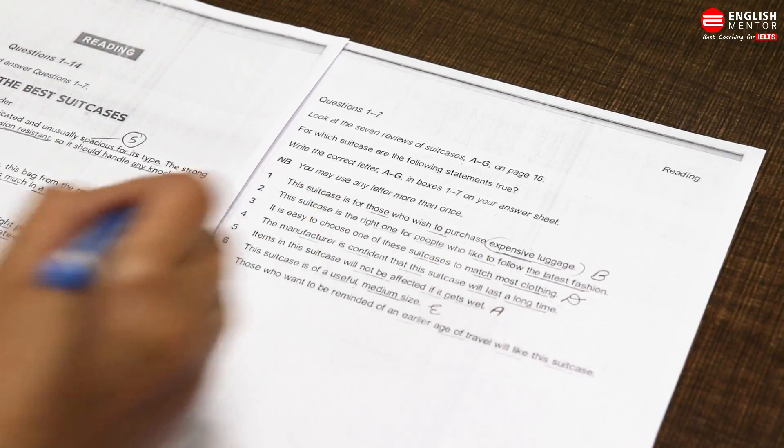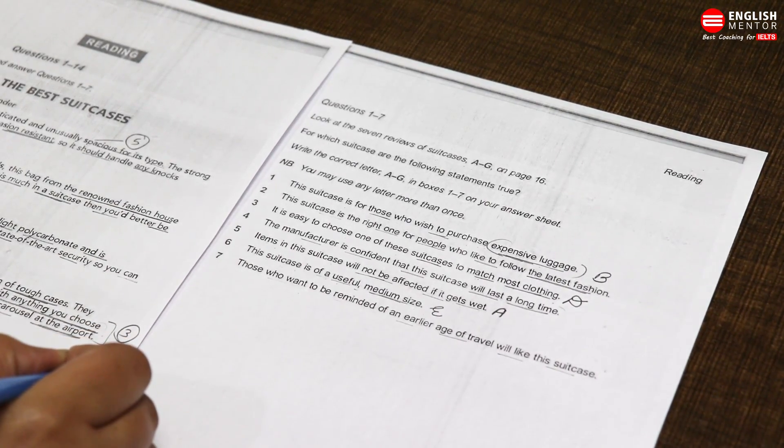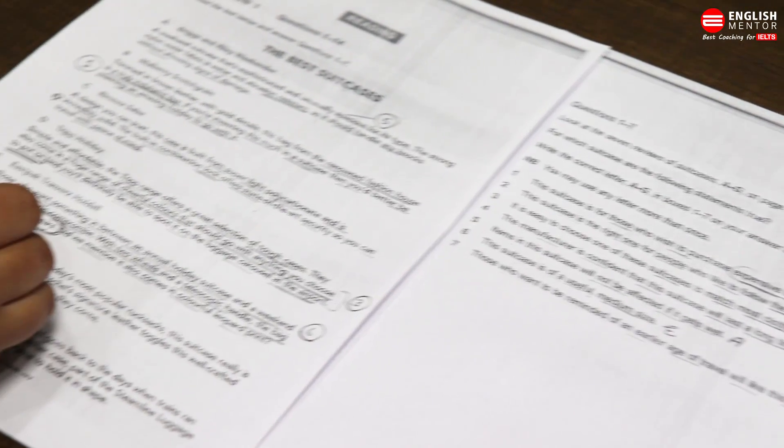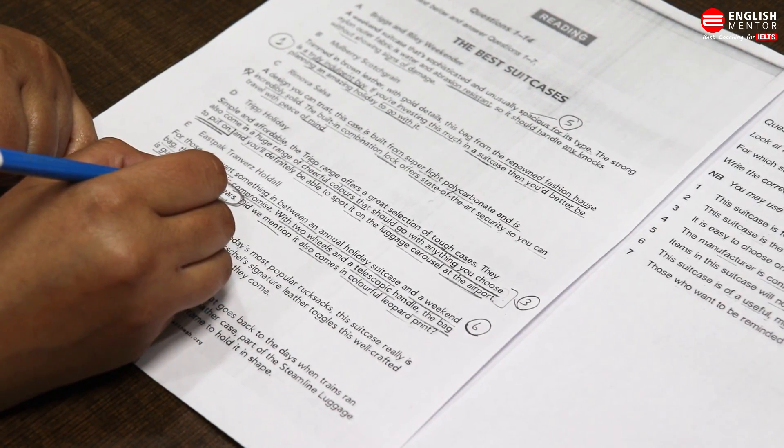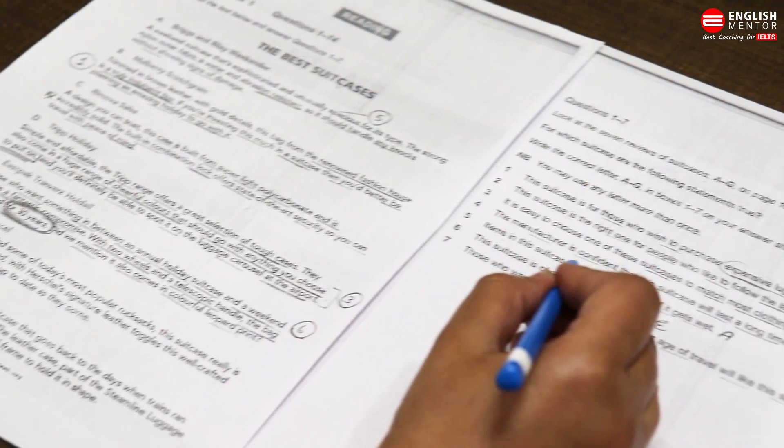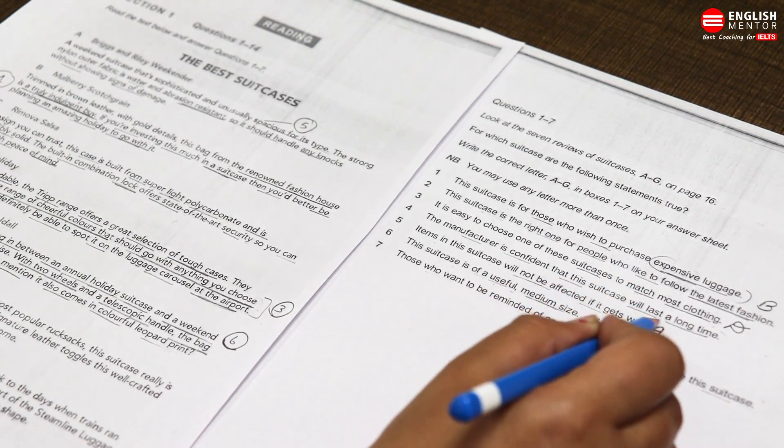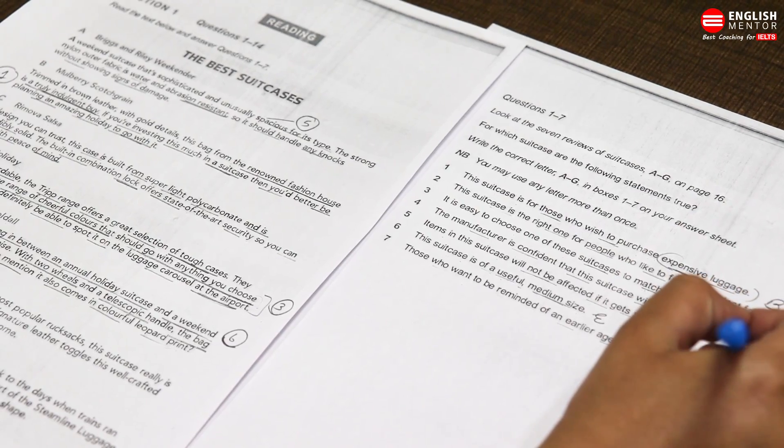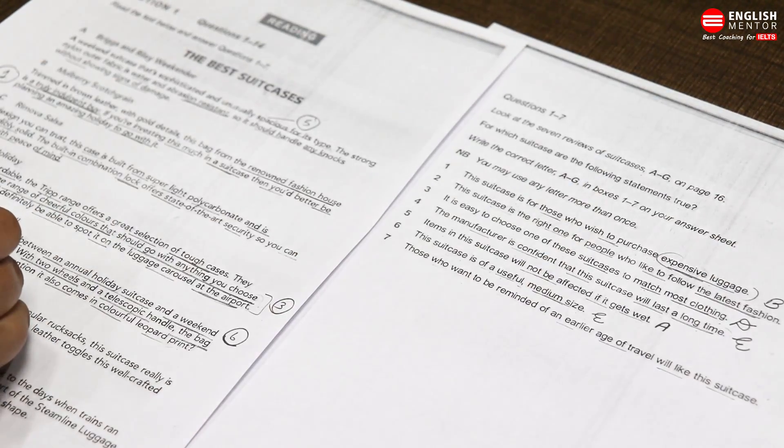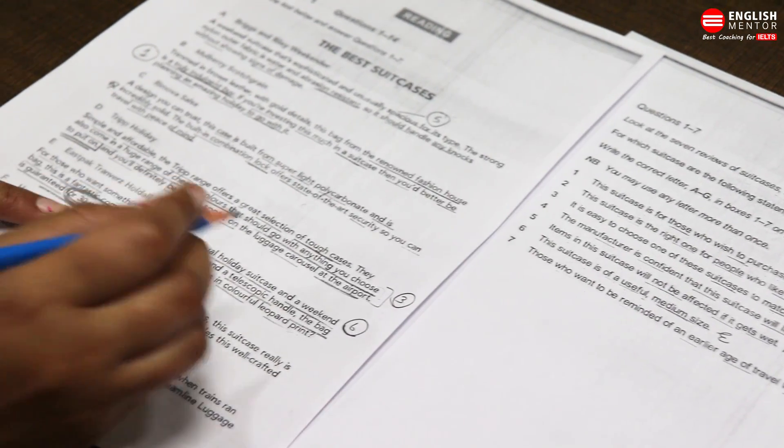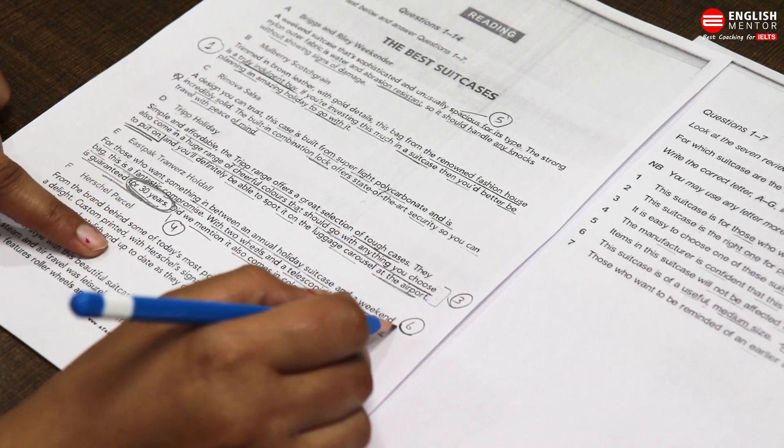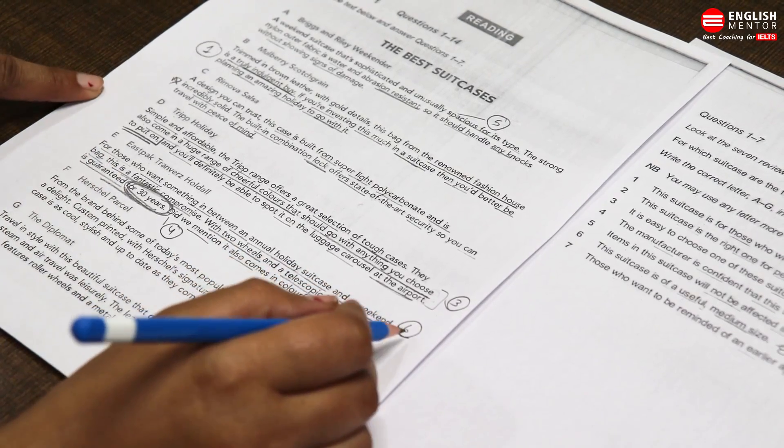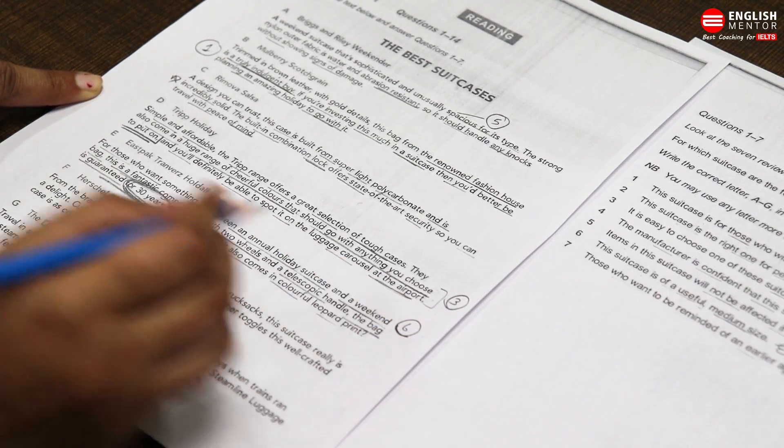If I check question number six, which is solved: this suitcase is useful and medium-sized. Weekend bag, fantastic compromise. For question six, I will mark option E. This also has another answer: 30 years guarantee. In question four, they talk about the manufacturer being confident that the suitcase will last a long time, because 30 years of guarantee is given here. Therefore the answer for question four is also E. By the RUP method, by reading only three lines, we solved two questions.